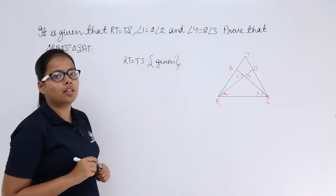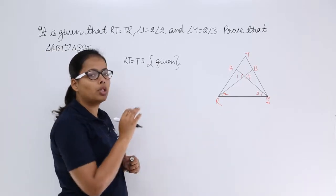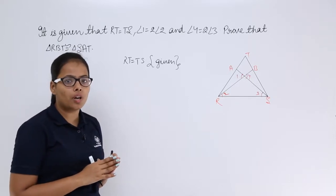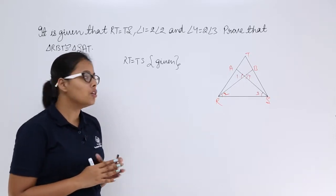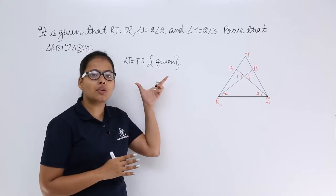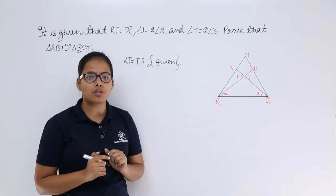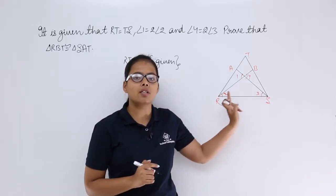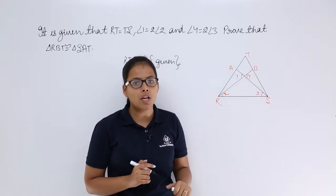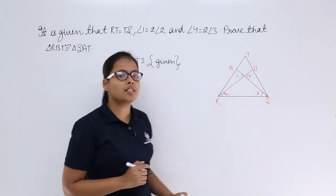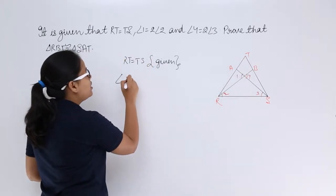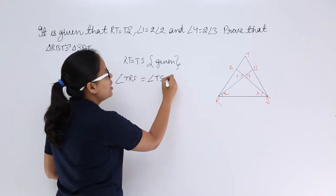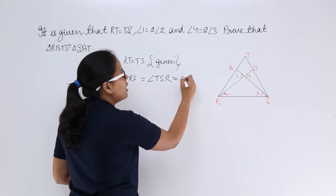Now in step 1, you will observe that if RT is equal to ST, which means that if two sides of a triangle are equal, then that triangle would be an isosceles triangle. So from this condition you conclude that this triangle is an isosceles triangle. If it is isosceles, the opposite angles to the equal sides will be equal — meaning angle TRS is equal to angle TSR. Let's suppose this angle is X.